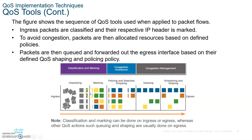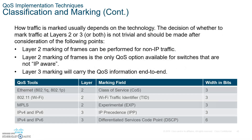When data comes in, it's classified or marked, then placed in a queue depending on its marking or classification, and the congestion management controls when it goes out. Marking goes on your packet or on your frame — either on your layer 2 frame or on your layer 3 packet. For layer 2, it can go on the Ethernet frame, the 802.1Q frame, or the MPLS frame. For layer 3, it goes on the IP packet or IPv6 packet.